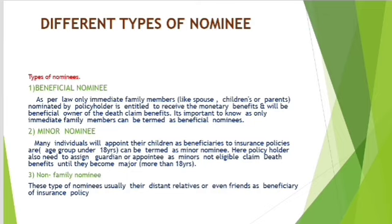An appointee is the person who, on behalf of the minor nominee, is authorized to receive the benefits in case of death of the policyholder. The third type is called non-family nominee. This type of nominee usually involves distant relatives or even friends as the beneficiary of an insurance policy.